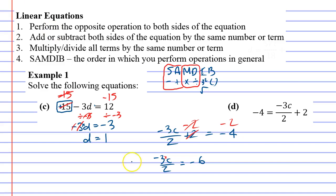I reckon we'll focus on the 2 first. This says divide 2. We're going to do the opposite. We're going to times 2 on both sides. And that leaves us with negative 3c equals negative 12.